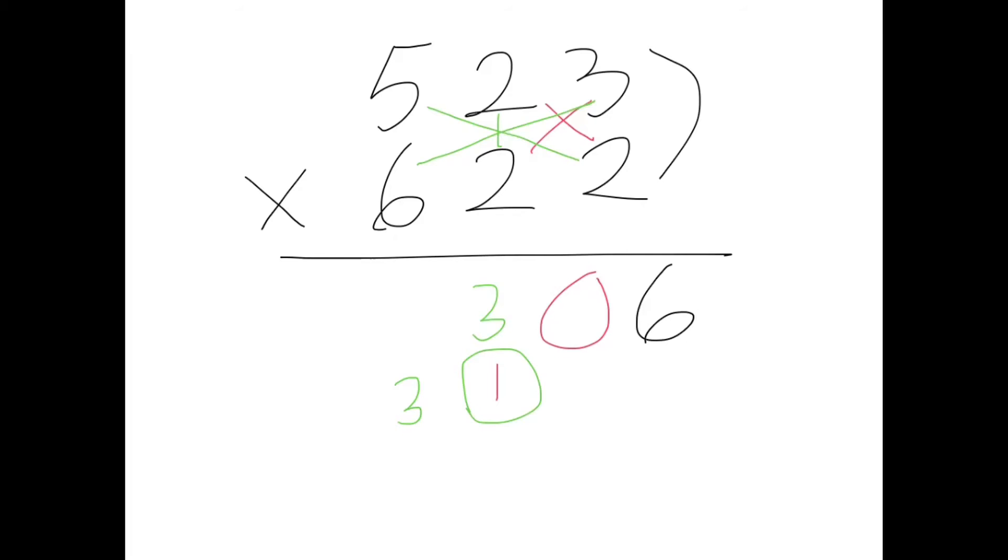And then we're going to do 6 times 2 plus 5 times 2. That is 12 plus 10, 22, plus this one, 25. Carry over the 2.